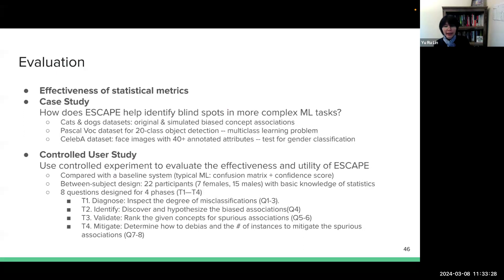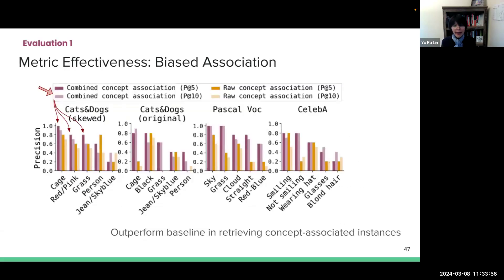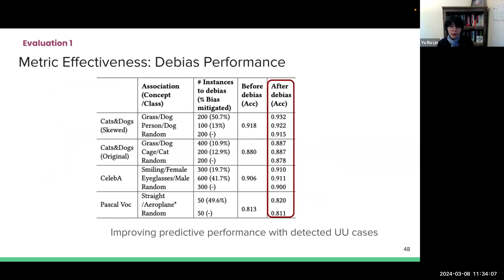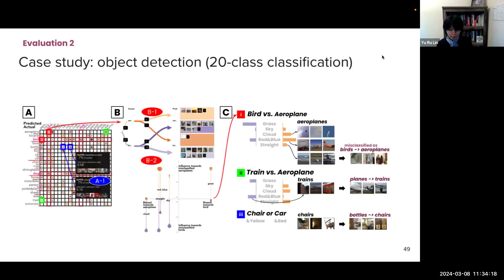And so we evaluate this approach in three different ways. We evaluate the effectiveness of our statistical methods. We show using ESCAPE in more complex machine learning tasks. And we did a control user study to test the effectiveness and utility of ESCAPE. So this is just to highlight that our statistical metrics for measuring bias association outperforms the alternative and baseline methods. And we show how the tools for measuring bias removal improve predictive performance with the detected unknown-unknown cases.